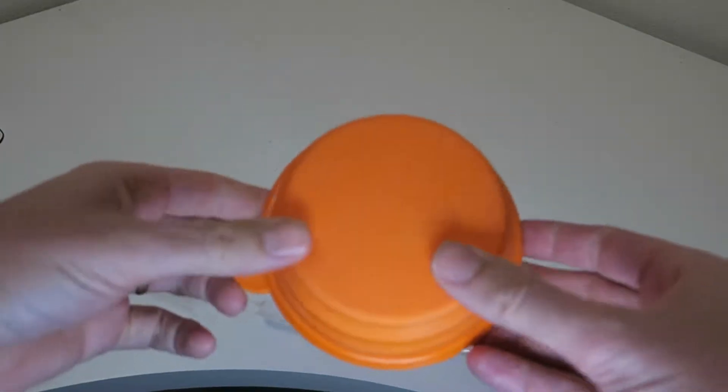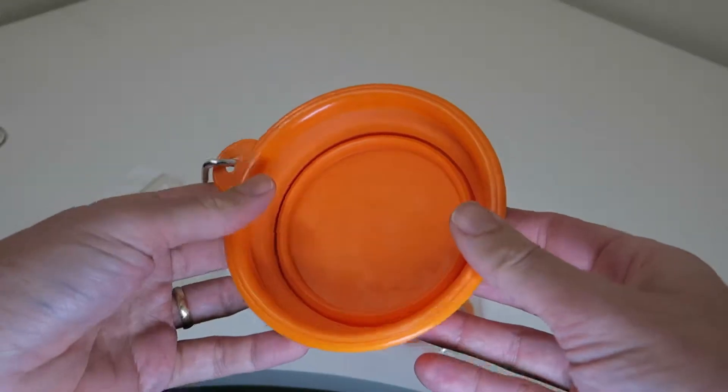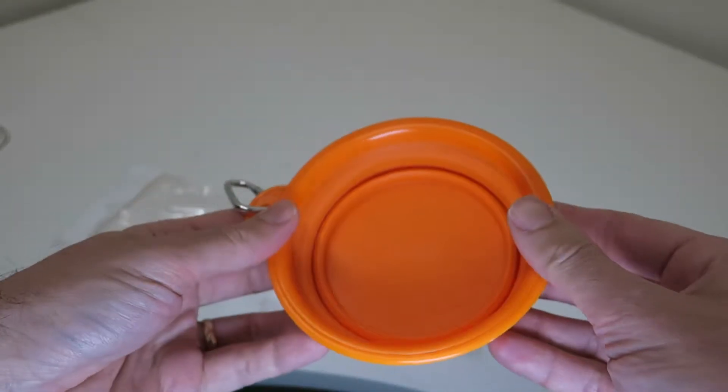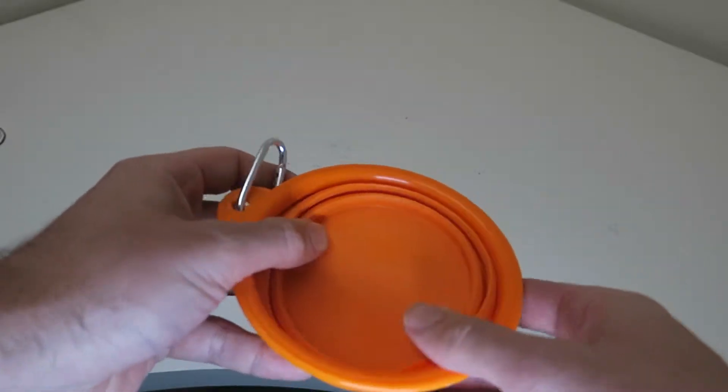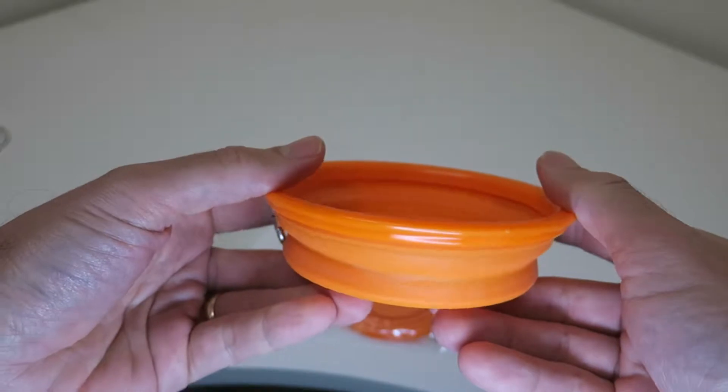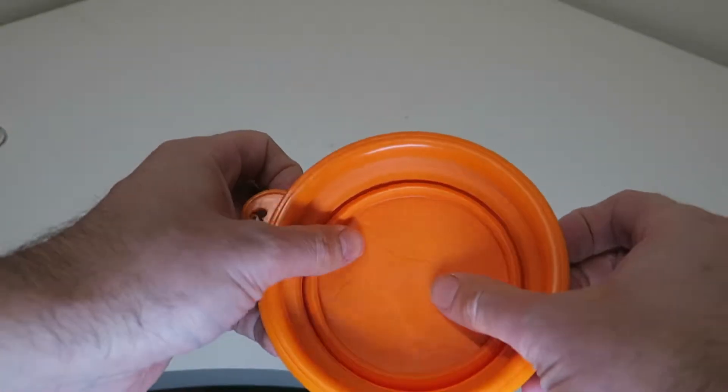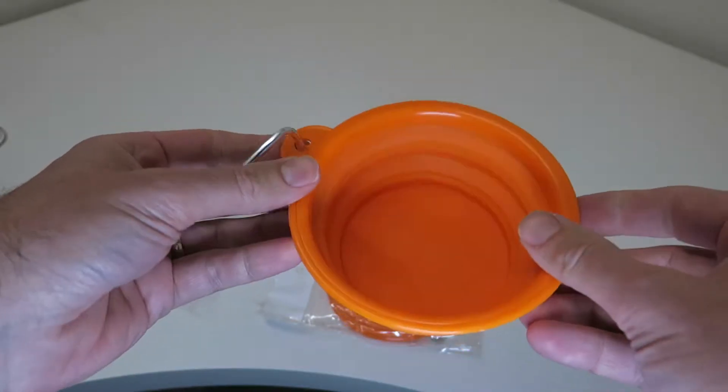We keep one in the car and one in the backpack. A feature beyond the portability is if your dogs are only going to drink a little bit of water, you can use this smaller setting so it's not as deep. Our dogs are pretty small, but you can go all the way deep as well.